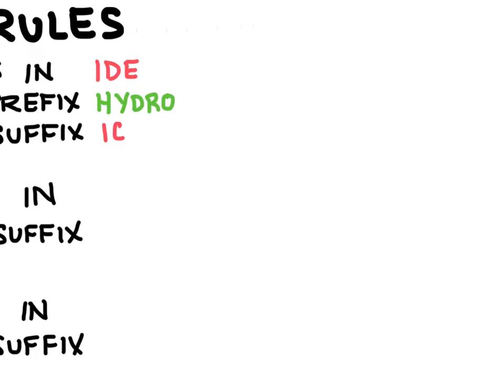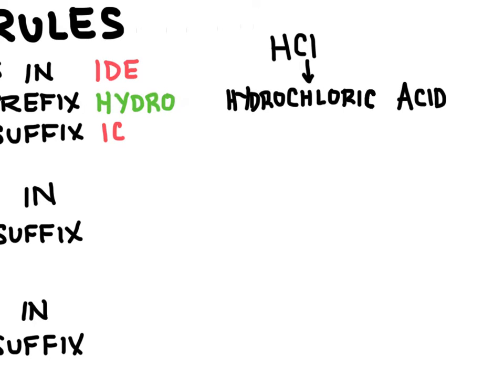This is what that would look like if we look at HCl, for example. The anion here is chloride. So we'll add the prefix hydro right on to the beginning of the anion. And then I'm going to change the ending from ide and change that to ic. And then I'll just put in the word acid. So that's the first rule.